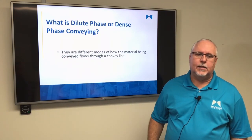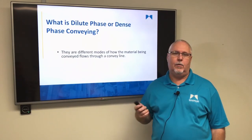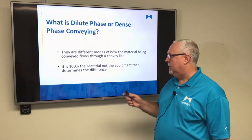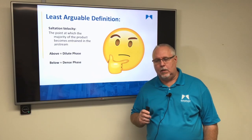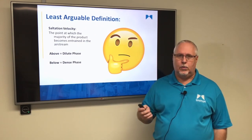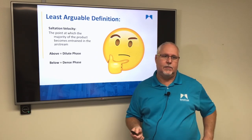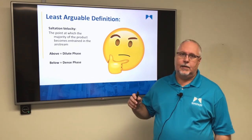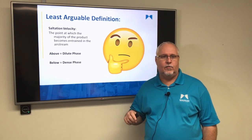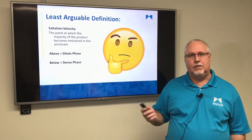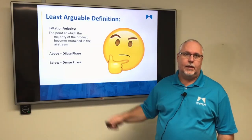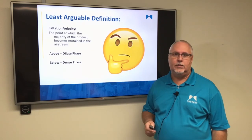So what is dilute phase and dense phase conveying? There are different modes of how a material moves through a conveying line, and it is 100% the material — not the equipment — that determines whether it is dense phase or dilute phase. There are a lot of definitions and opinions out there, and the least arguable definition of the difference is saltation velocity: what velocity is required in a convey line to keep the product suspended, or does it start to fall out? Anything above the saltation velocity is defined as dilute phase; anything below is dense phase.